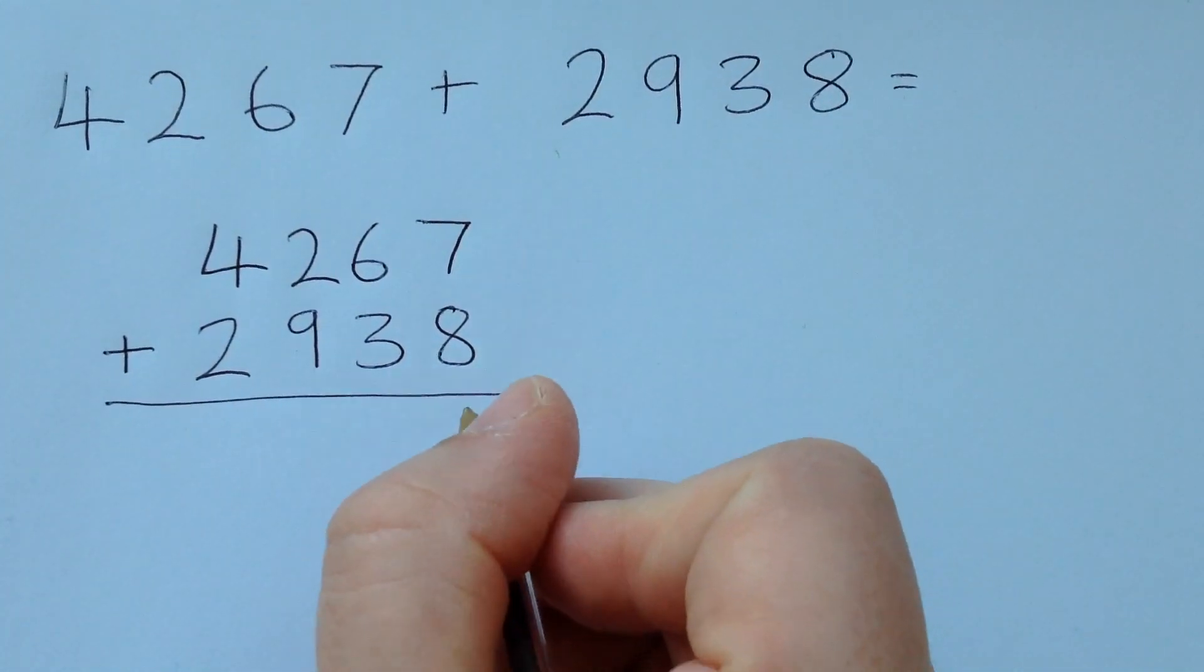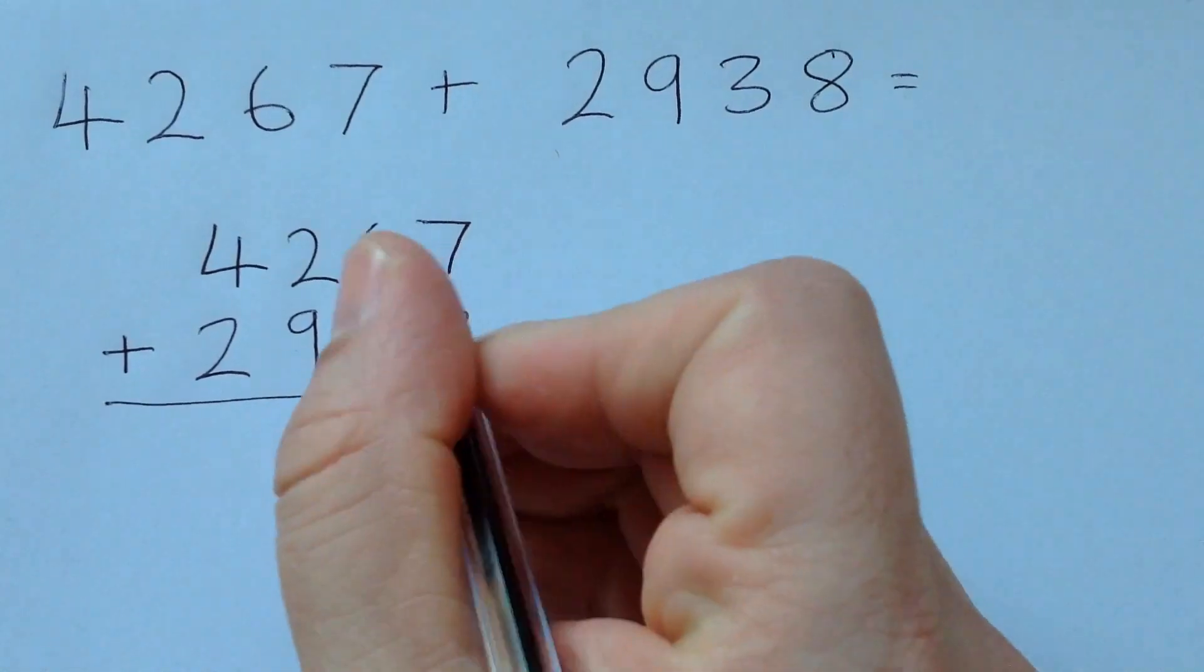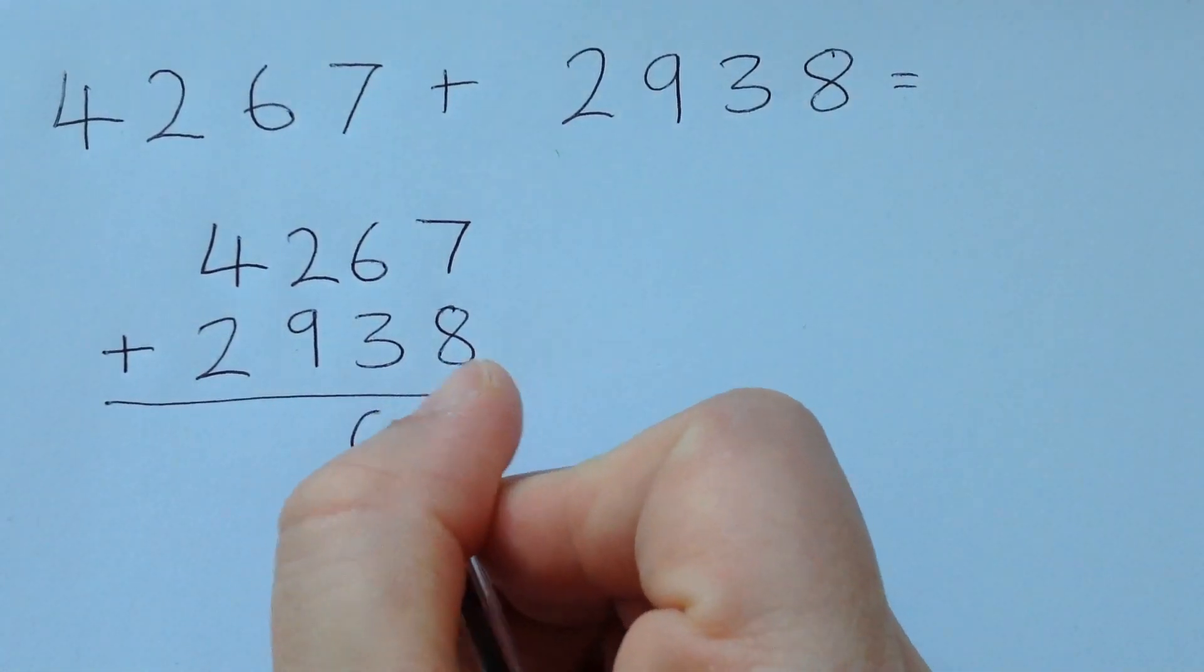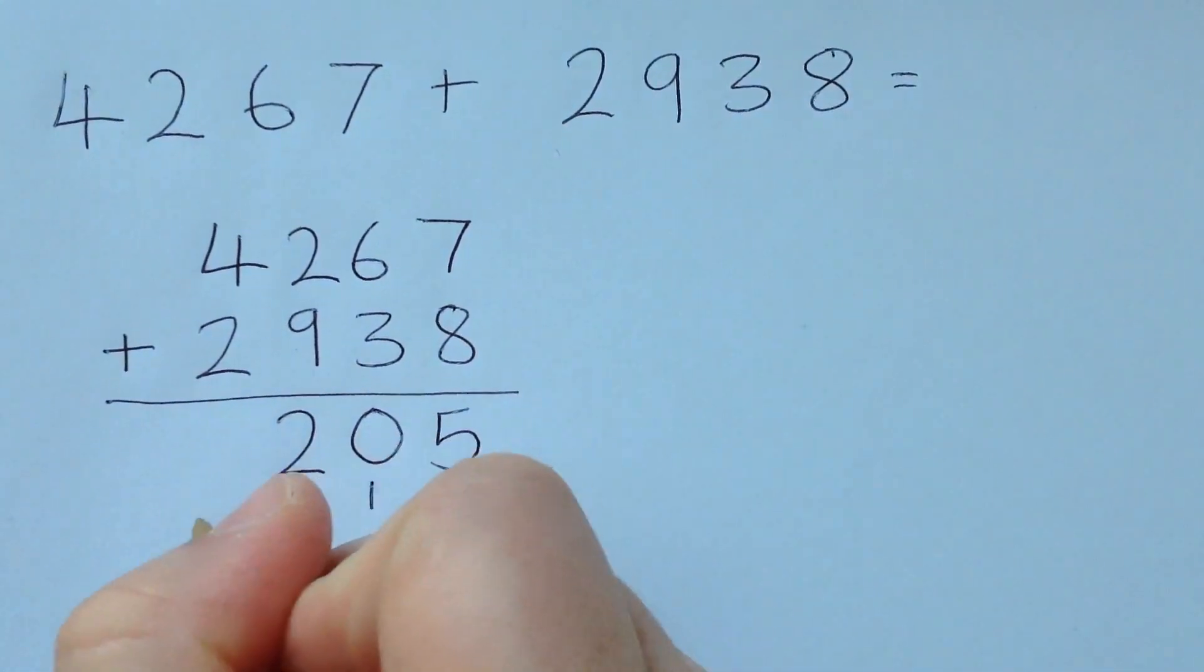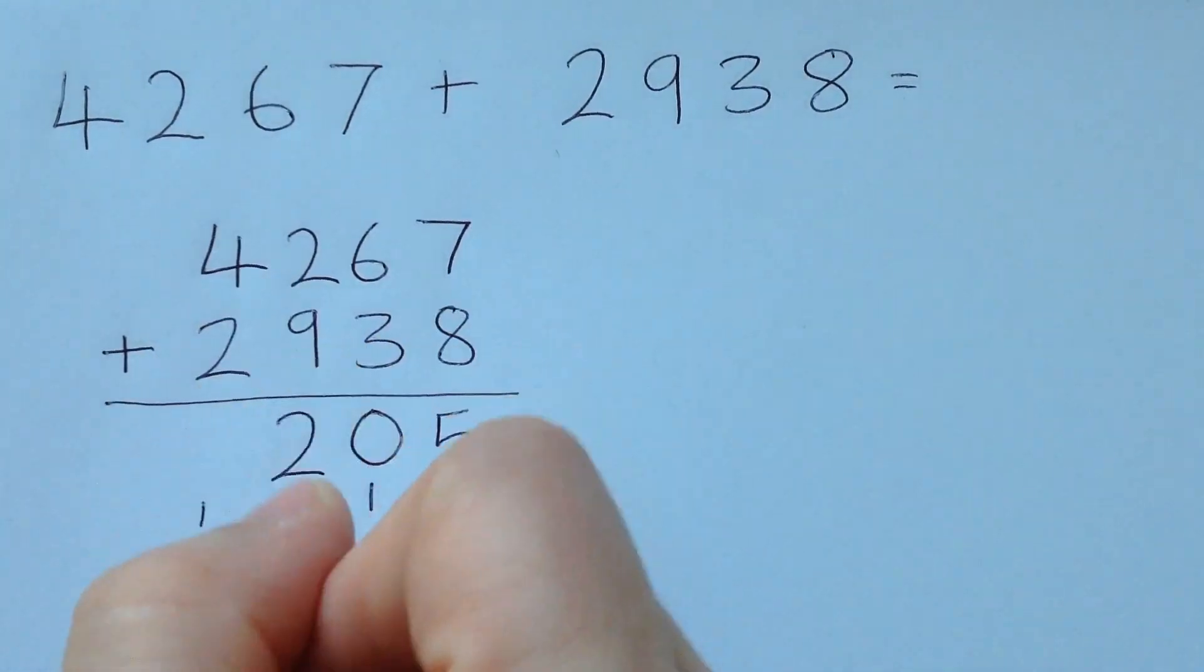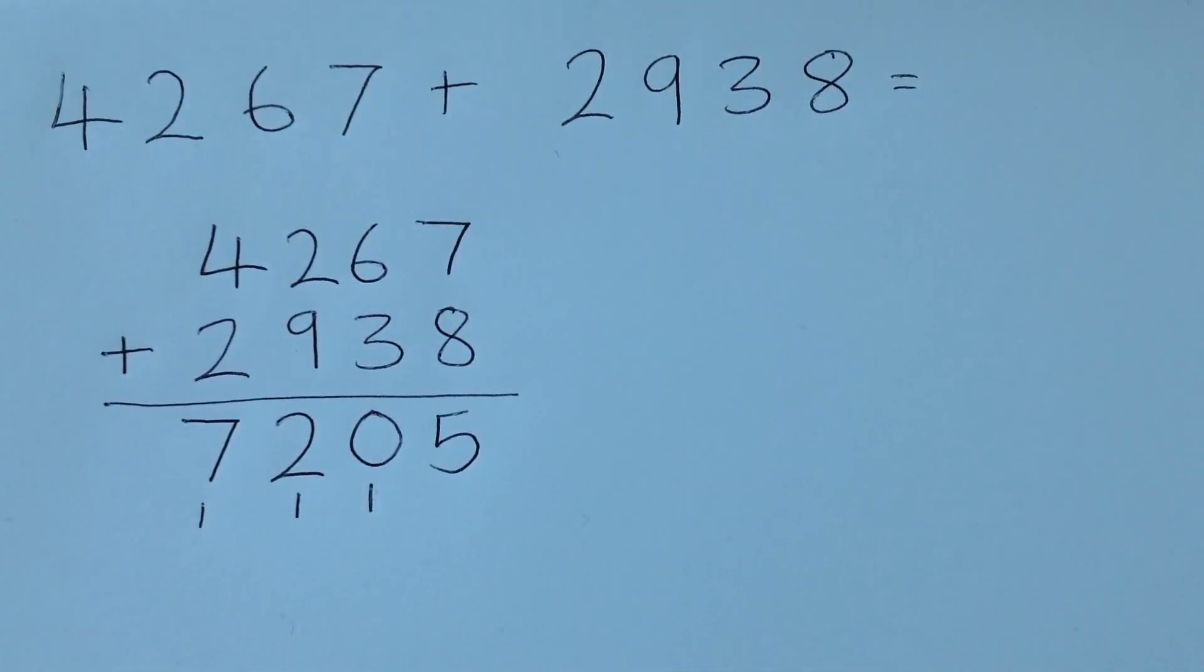And seven plus eight is fifteen. Six plus three is nine, plus one is ten. Nine plus one is ten, plus two is twelve. Four plus two is six, plus the one is seven. There we go. That was pretty simple.